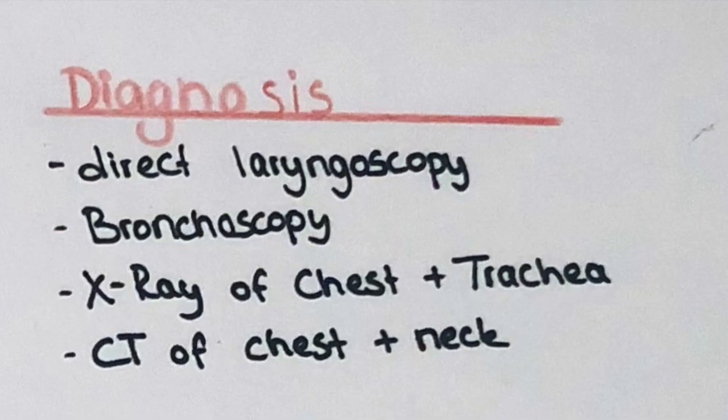The diagnosis is done by direct laryngoscopy or bronchoscopy, and endoscopy allows grading by viewing the lumen of the airways and seeing by what percentage it is narrowed. It is also possible to make an X-ray of the chest and trachea, or a CT of the chest and neck to image more of the airways and see if there is any narrowing.